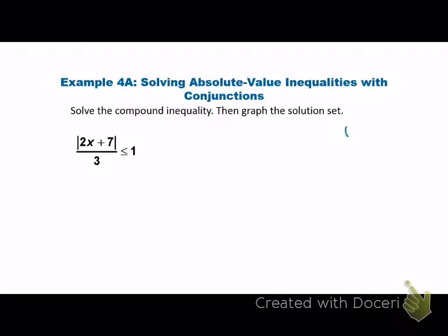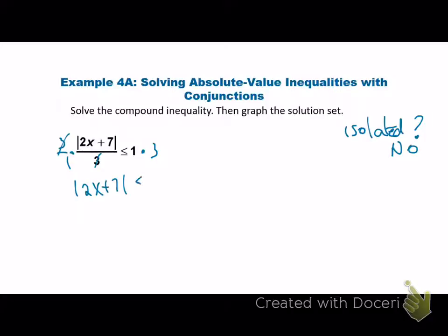I'm going to come over here and ask myself that all-important question: is your absolute value isolated? Yes or no? No. So we have to fix that. The 3 needs to go — it is a denominator, so we get rid of it by multiplying. We'll multiply both sides by 3, and we'll cancel out. So we're going to have the absolute value of 2X plus 7 less than or equal to 1 times 3, which gives us 3.